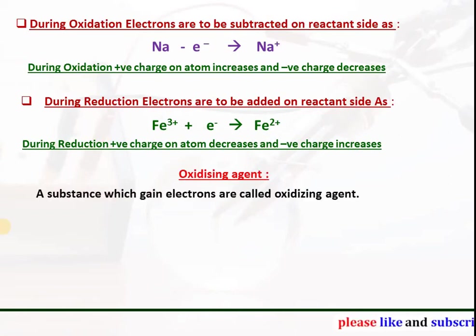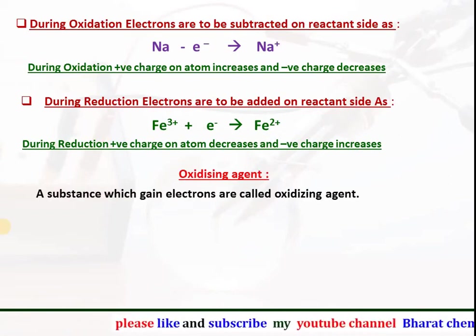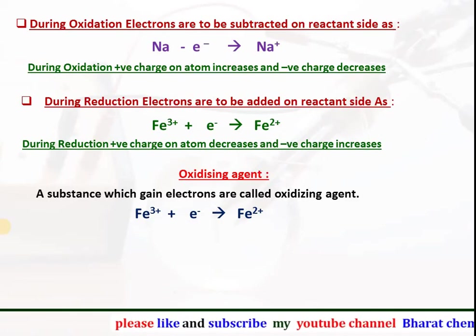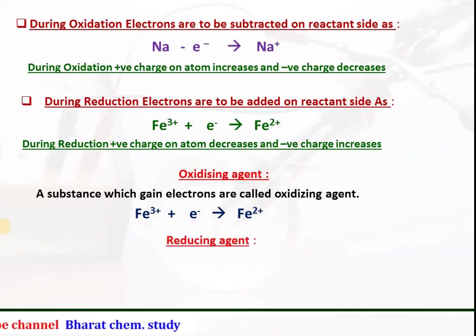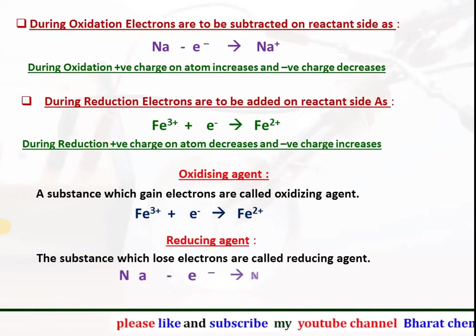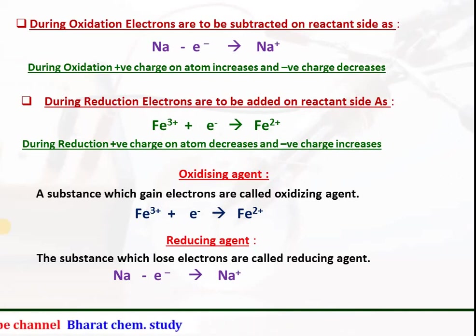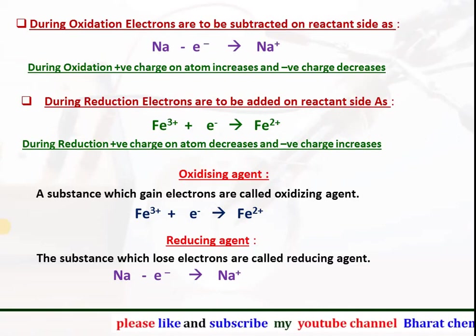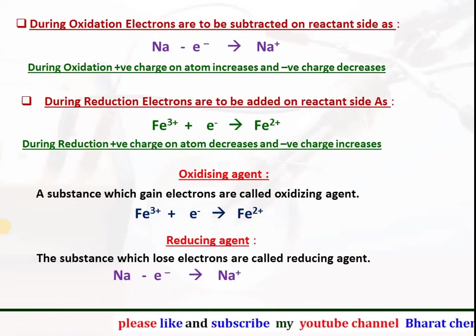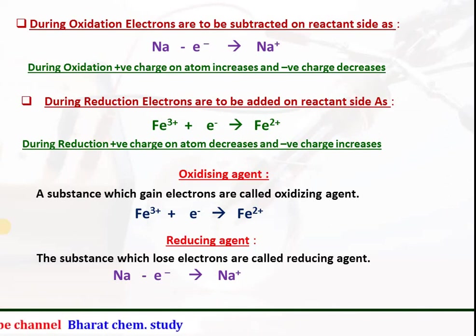Oxidizing agent: the substance which gains electrons is called an oxidizing agent. For example, Fe³⁺ ion gains one electron, undergoes reduction, and acts as an oxidizing agent. Reducing agent: the substance which loses electrons is called a reducing agent. For example, sodium loses one electron, undergoes oxidation, and acts as a reducing agent. So the conclusion is: the substance which undergoes oxidation acts as a reducing agent, and the substance which undergoes reduction acts as an oxidizing agent.